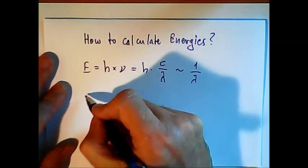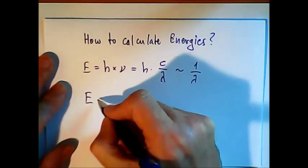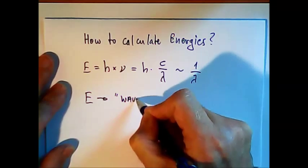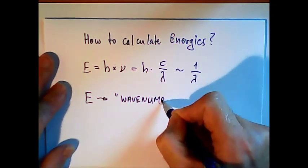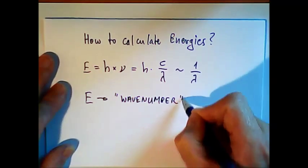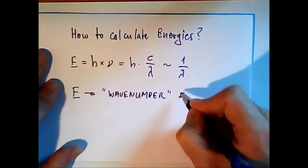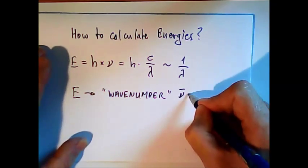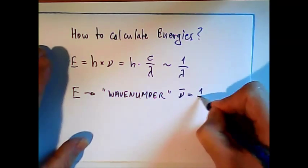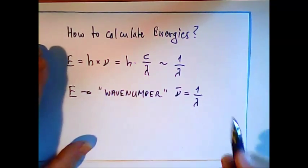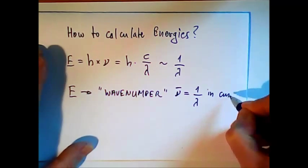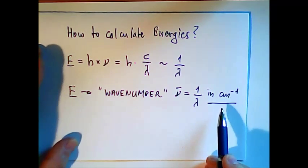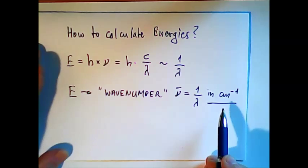So in spectroscopy — not in physics — we use as an energy unit the so-called wave number, nu-bar. Please don't confuse it with the frequency. This nu-bar equals 1 over lambda, but careful: the unit is centimeter to the power minus 1, not nanometer to the power minus 1.